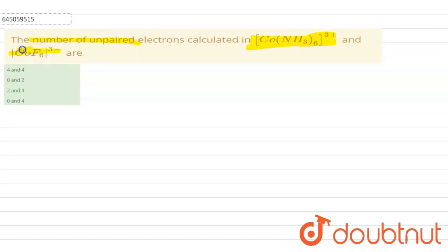First complex is of cobalt with ammonia, and the second is cobalt with fluorine. First of all, let's write down both complexes. The first complex is [Co(NH3)6]^3+.